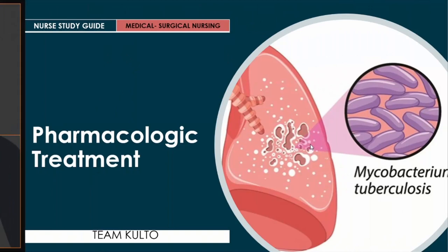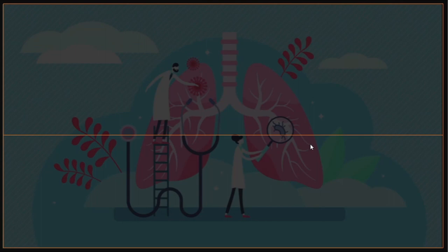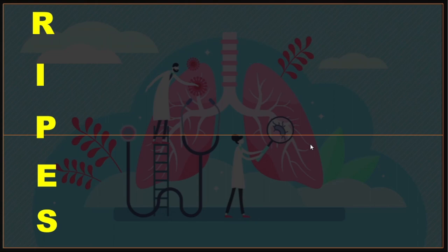Now, what are the pharmacological treatments? Remember the mnemonic RIPES. Starting with R — rifampicin. Rifampicin is a bactericidal agent that turns the urine and other body secretions orange or red. It has common side effects of hepatitis, febrile reaction, purpura, nausea, and vomiting. Watch out — rifampicin is hepatotoxic, so you need to observe for signs of hepatotoxicity, and baseline liver function tests should be done.